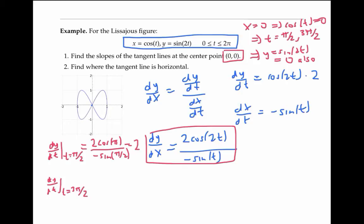And when t is 3π/2, we get 2cos(3π) / -sin(3π/2), which simplifies to -2. So our tangent lines at the origin have slopes +2 and -2.